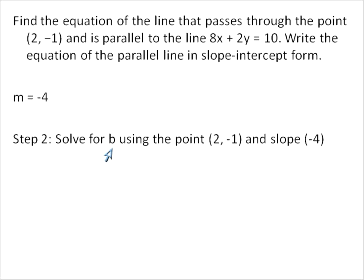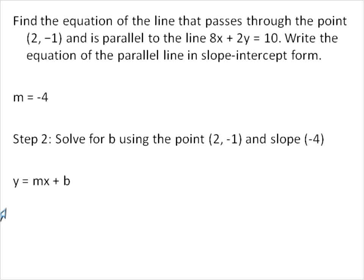Step 2 is to solve for the value of b using the point (2, -1), because we know that's on the line, and the slope of -4. If we're given an x value, a y value, and the slope, all we need to do is substitute that information into the slope-intercept form of the line and we will be able to solve for the value of b. So we found m, now we need to find b. Our y value is -1, our x value is 2, and our slope m is -4. We're substituting those three pieces of information in and solving.